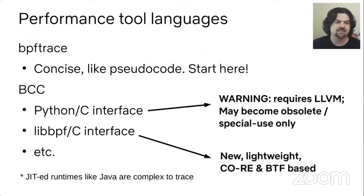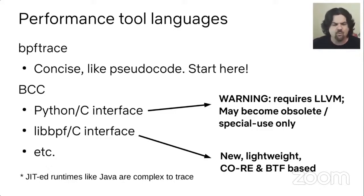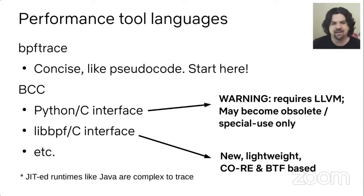For coding BPF performance tools, the language you should start with is BPFtrace — the newest language we've developed. It's concise, like pseudocode, which makes it easy to develop and maintain. BCC is an older frontend but still in heavy use, providing different language interfaces. One of the earliest was the Python/C interface, and a newer one is the LibBPF C interface. We're moving onto LibBPF for performance tools because it doesn't require LLVM and allows new lightweight tools to be developed — that will be the interface for the future of performance tools.